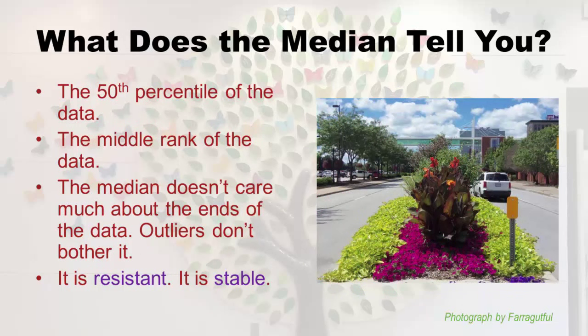What does a median tell you? It's called the 50th percentile of the data — 50% of the data points are below the median and the other half are above. It's also known as the middle rank of the data. What's nice about the median is it doesn't really care about the ends of the data. Outliers don't really bother it. If one or two people get a zero on the quiz in a class of 100, it really won't affect the median. We like the median because it's very resistant and stable — you can't really whack it out with outliers on the ends.